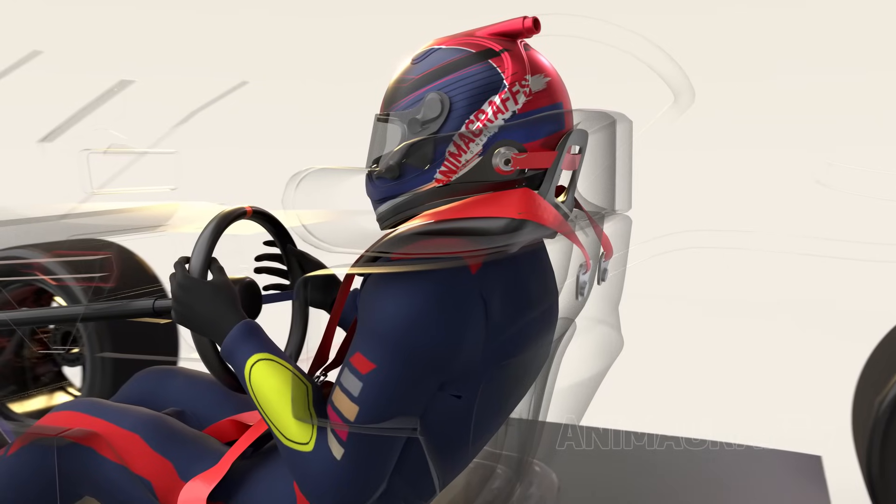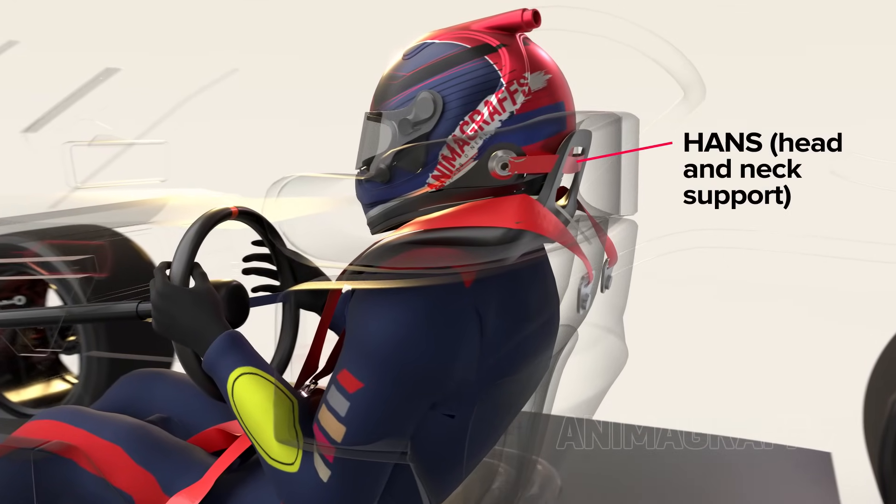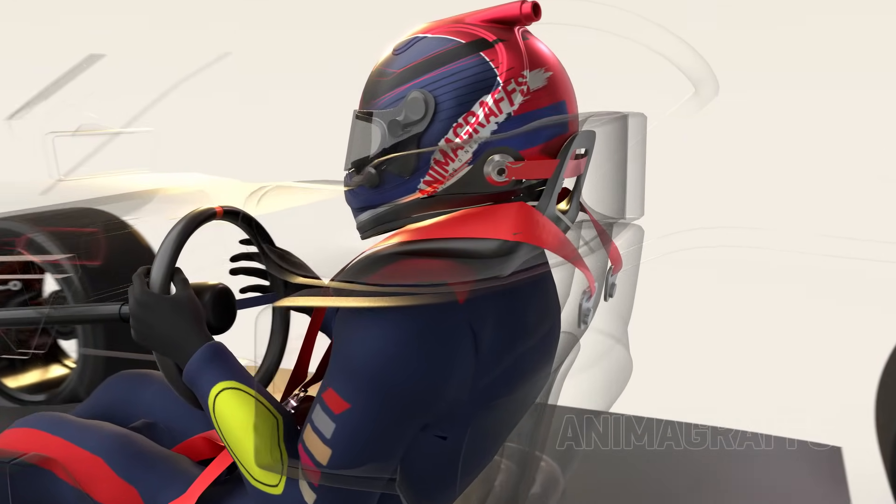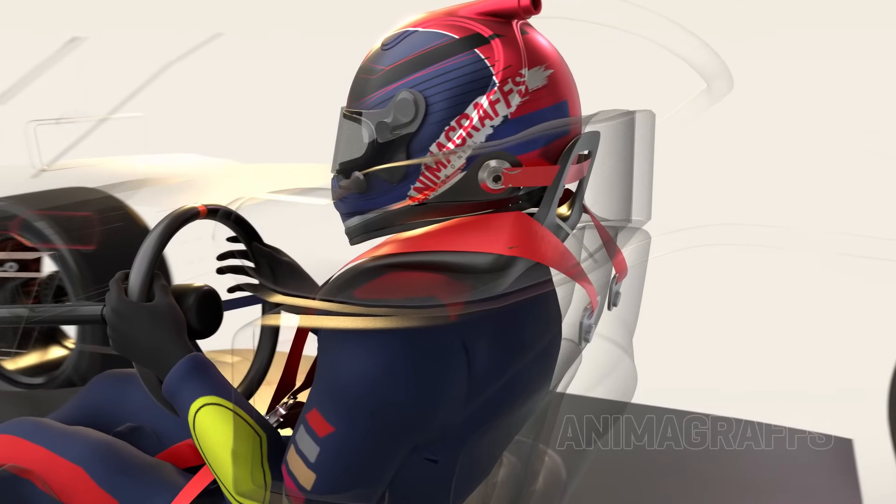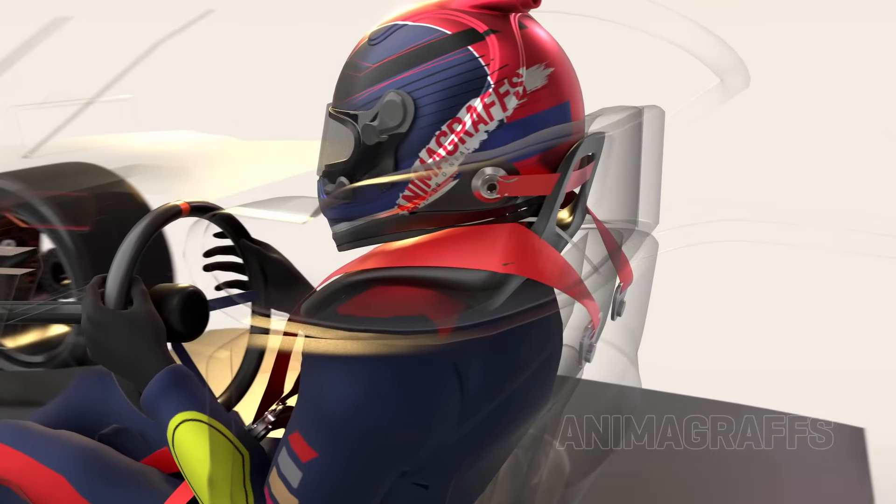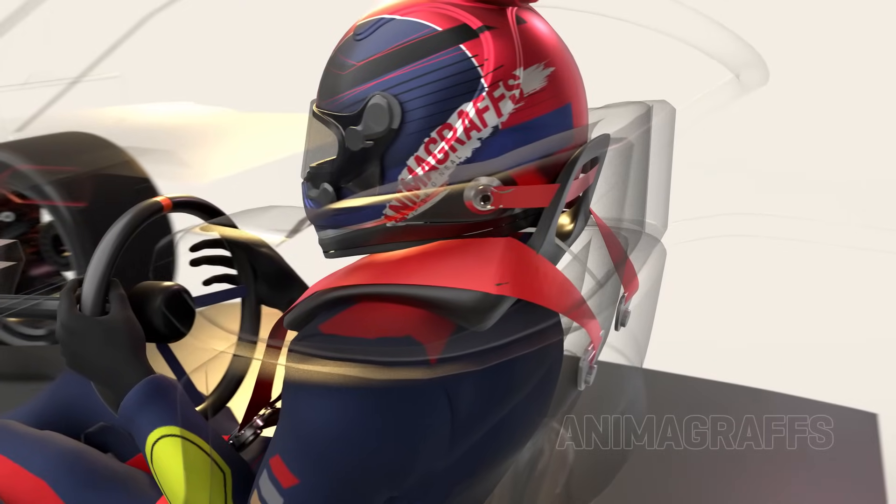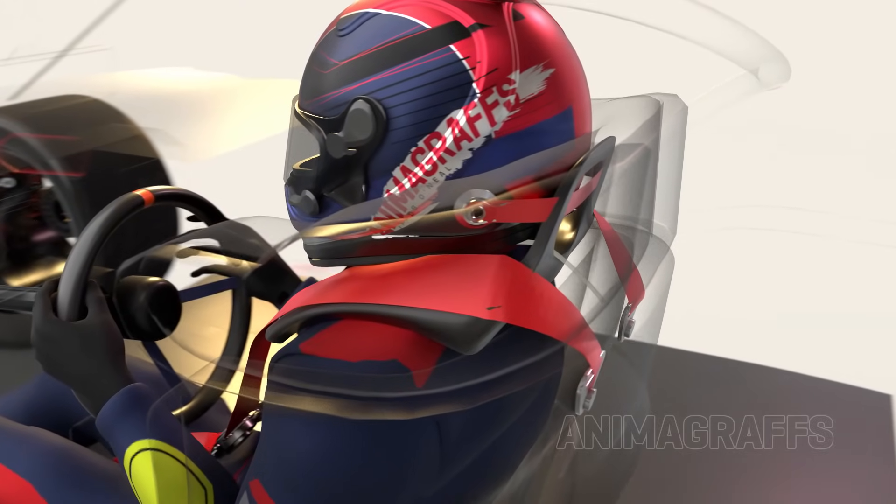Drivers wear a special brace called the HANS, or head and neck support, to limit head movement in adverse conditions. A connected strap clips to either side of the helmet, and the shoulder harness straps keep the device pressed against the driver.